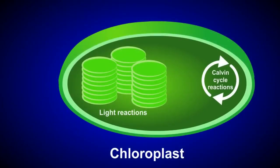Photosynthesis consists of two primary steps: the light reactions and the Calvin cycle reactions. In this tutorial, we'll focus exclusively on the Calvin cycle reactions.